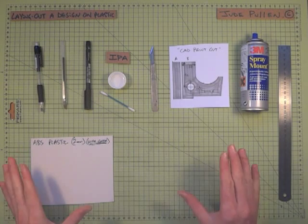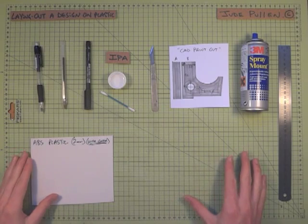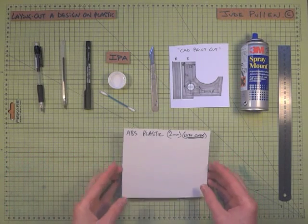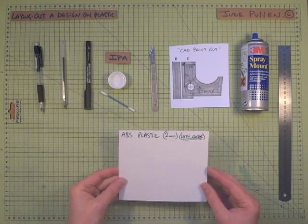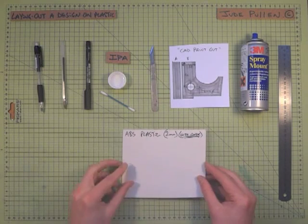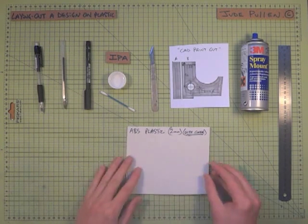Okay, so I thought I'd give a few tips on how to lay out a design on plastic. In this case, I've got some ABS plastic which is 2mm thick and still has its protective covering on it.